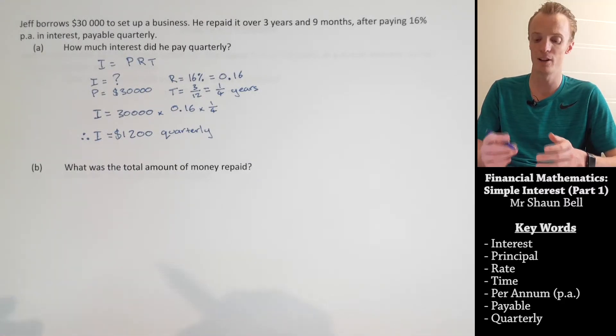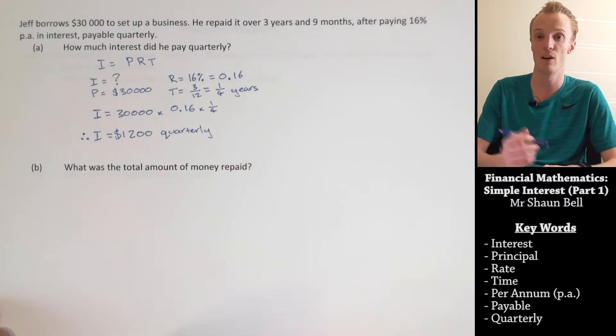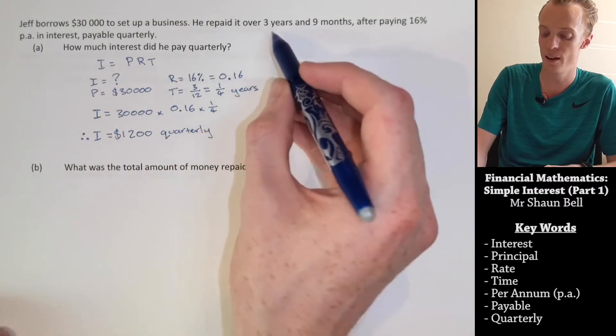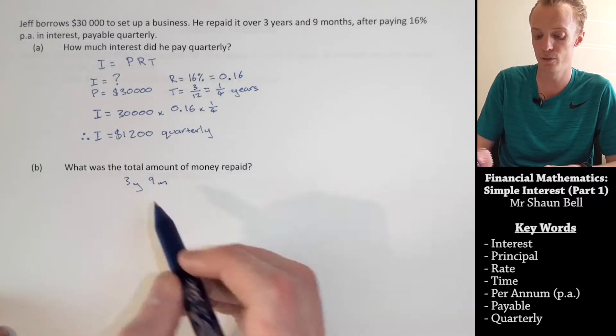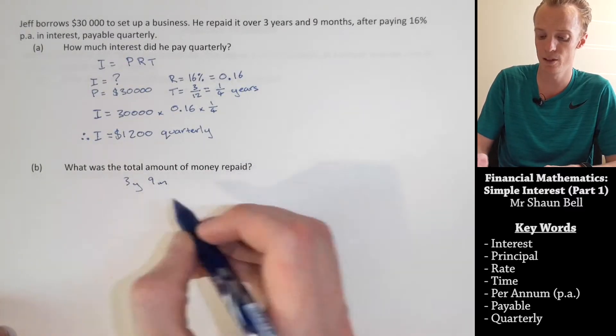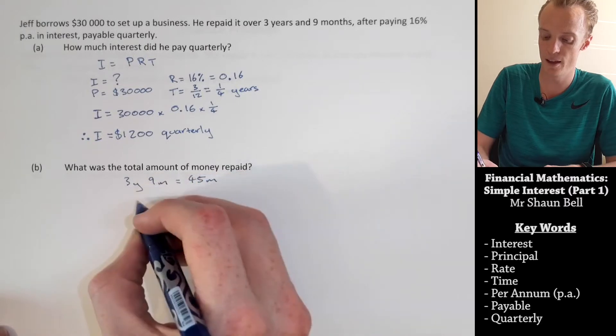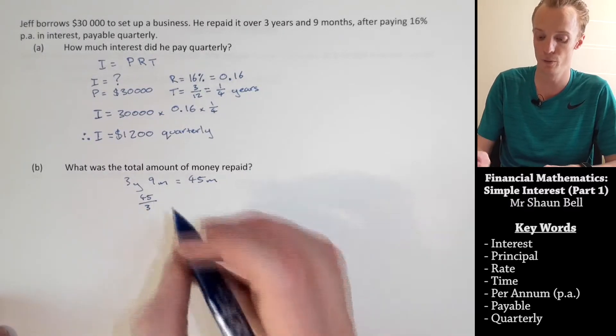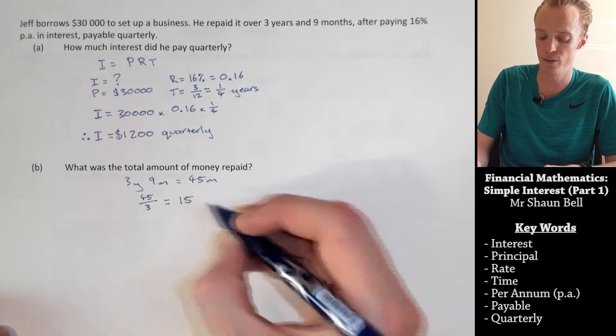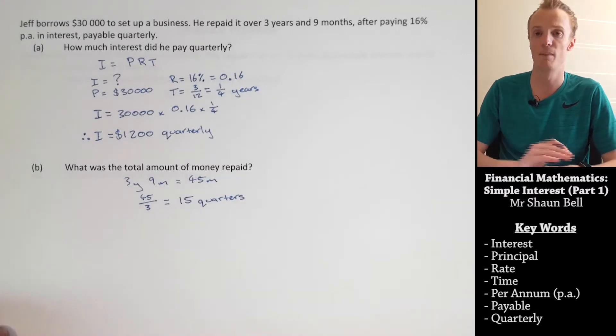So, in order to work out how much total interest he would pay in that time, we first have to work out how many quarters are in three years and nine months. To do that, we work out three years and nine months. How many months are in that? Well, three lots of 12 are going to be 36 months, plus the nine is equal to 45 months. Now, to get this into quarters, we need to divide the 45 by three months each, which I've represented in fractional form, which goes perfectly 15 times. So, there's 15 quarters in three years and nine months.